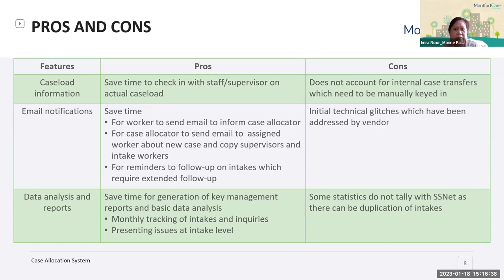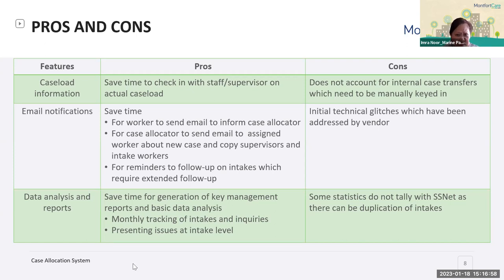For the cons: sometimes we need to do an internal case transfer, which is not captured in the system. Technical glitches do occur on and off, but when we surface them the vendor usually addresses them. Another con is that some statistics have duplicates, which affects accuracy.